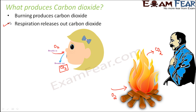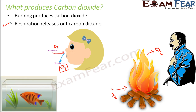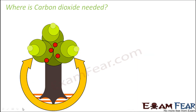Carbon dioxide is released not only by human beings but by all other animals as well. Even fish — with the help of their gills, they take in oxygen from the water and give out carbon dioxide into the water. That is how carbon dioxide is present in water bodies.